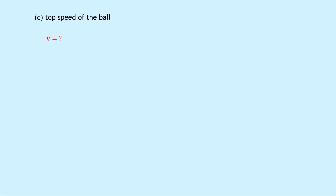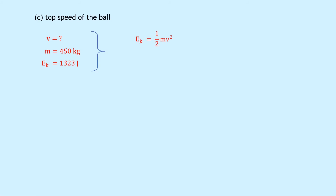Part C says to find the top speed of the ball. We're trying to find speed, the mass is 450 kilograms, and the maximum kinetic energy is 1,323 joules — which gives us the top speed. Using Ek equals a half mv squared, we have 1,323 equals a half times 450 times v squared. Multiplying both sides by 2 and dividing by 450 gives v squared equals 5.88. Square rooting both sides, we get v equals 2.4 meters per second.